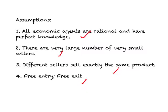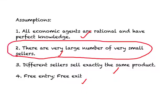Now if any one of these assumptions is dropped, or all of them are dropped, we will have less than perfect competition. Let us focus on dropping the assumption of a very large number of very small sellers. Remember what this assumption implied — it implied that each firm is a price taker, or they have no control over the price. Whatever is determined in the marketplace is taken as given by each seller. Once we drop this assumption, each firm will have some control over the price.